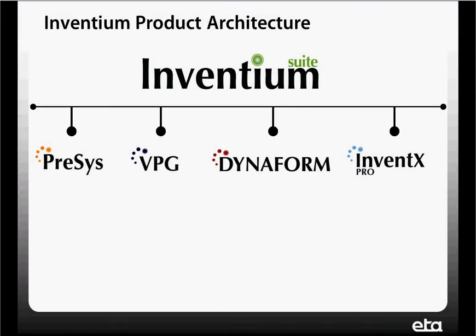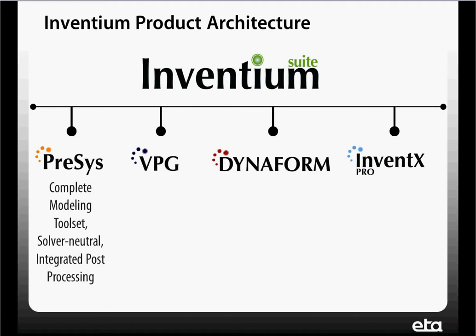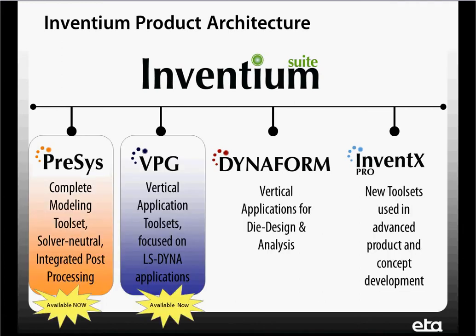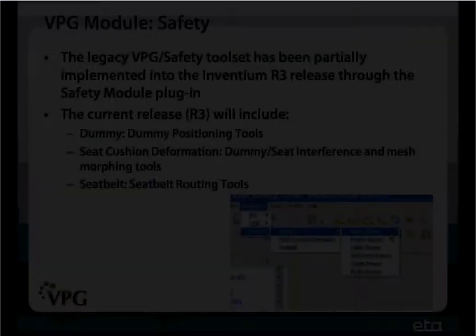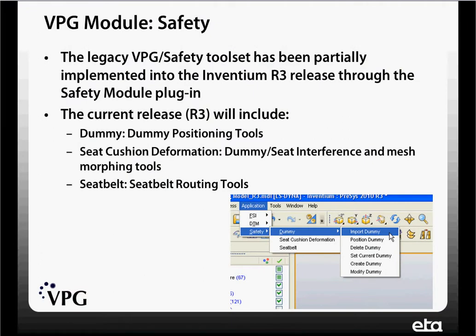Inventium is ETA's enterprise-level software architecture. That includes our PreSys product, which is a complete FE modeling toolset. It also includes VPG, Dynaform, and EventX Pro. The PreSys and VPG products are available today. VPG are application tool sets that are specific to LS Dyna applications. That module, the VPG safety module, is based off of our legacy VPG safety toolset, and we've implemented a good portion of that in our R3 release through a plug-in.